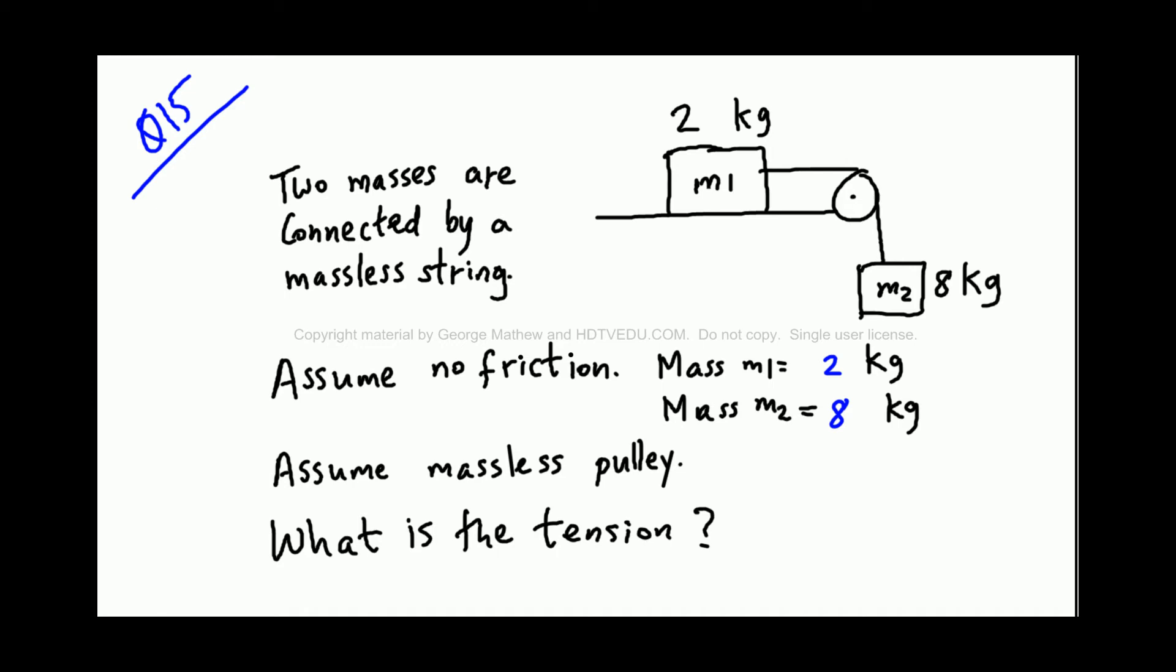Question number 15. Two masses are connected by a massless string. Assume no friction. Mass M1 is 2 kg, mass M2 is 8 kg. Assume massless pulley. What is the tension?